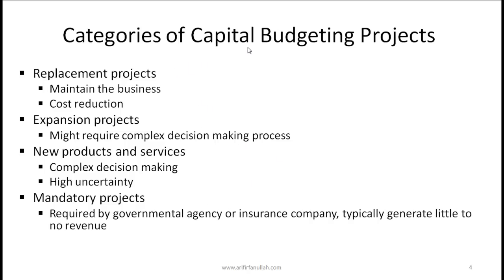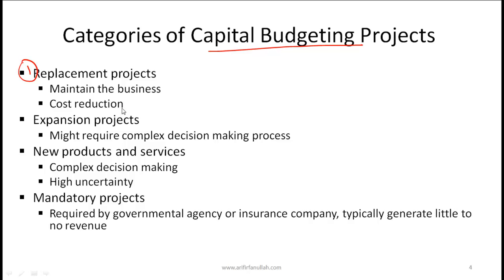There are different categories of capital budgeting projects. Number one: replacement projects. If we are running a given machine that is getting old, replacement of that machine comes in this category. Replacement projects are necessary because we want to maintain our business. We might also do a replacement project as a cost reduction exercise — for example, if a given piece of equipment has become very expensive to maintain, replacing it with a more efficient one would be such an exercise.